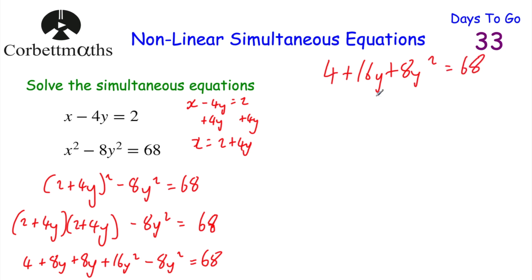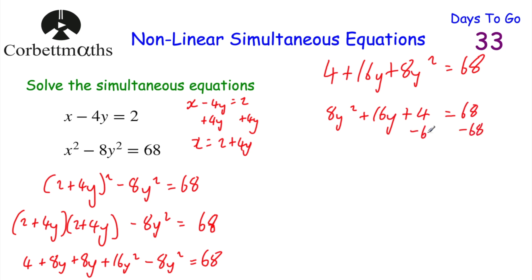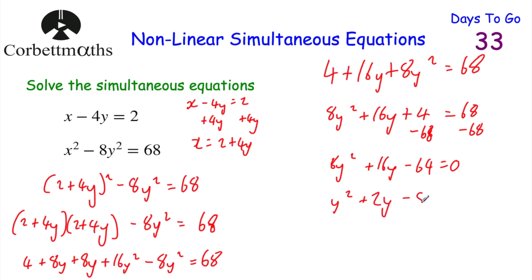Rearranging as 8y squared plus 16y plus 4 equals 68, then subtracting 68 from both sides gives 8y squared plus 16y minus 64 equals 0. All terms are divisible by 8, so dividing through gives y squared plus 2y minus 8 equals 0.